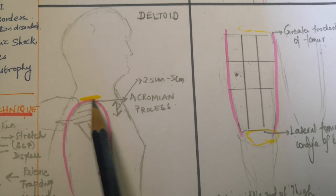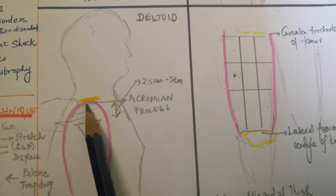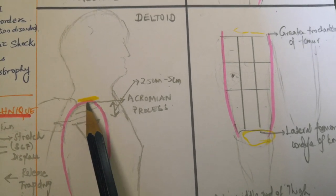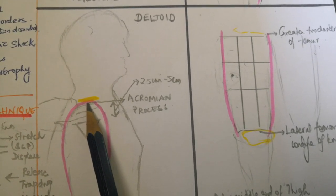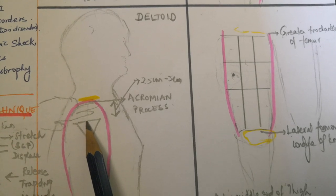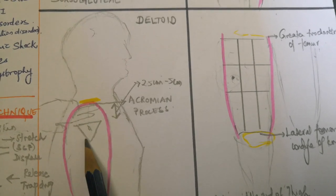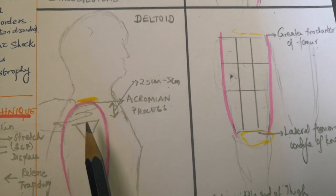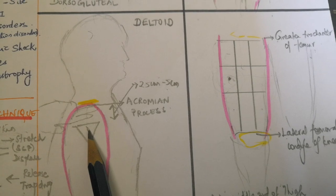For the deltoid site, identify the acromion process. The injection site is 2.5 to 5 cm below the acromion process — that is the deltoid region and site of injection.